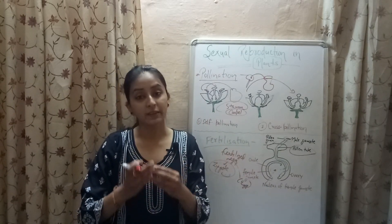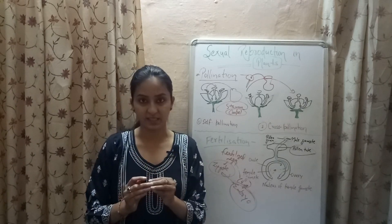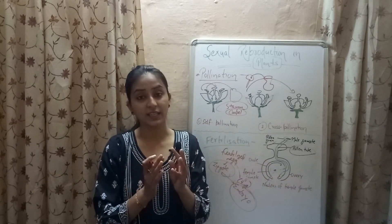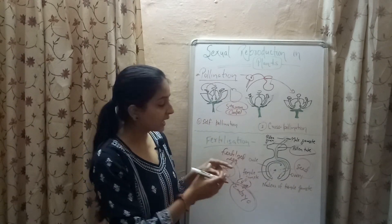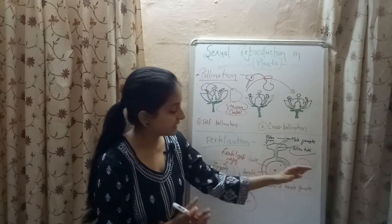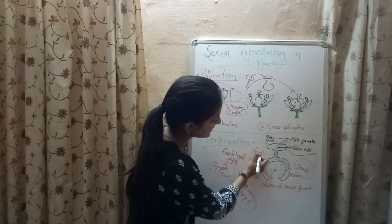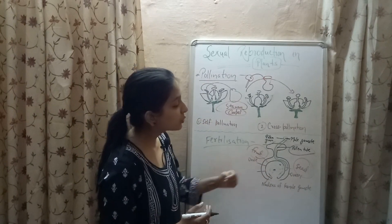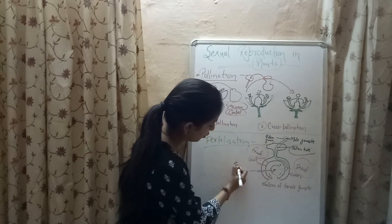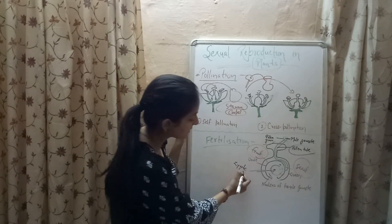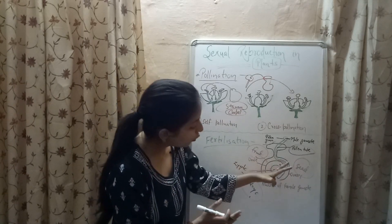The zygote undergoes several divisions and forms a structure known as an embryo, and inside this embryo the baby plant is present. Meanwhile, the ovule develops a hard coating and develops into a seed. So when the zygote divides to form an embryo, the ovule is surrounded by a hard coating and forms the seed. The seed is present inside the ovary, and the ovary grows and develops into fruit. This is how seeds are formed inside the fruit.